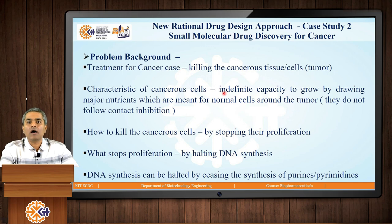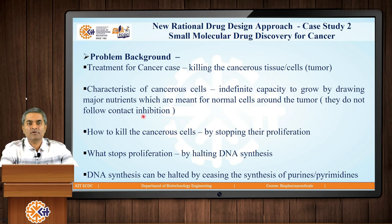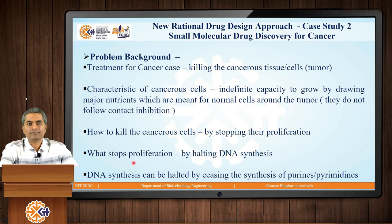Cancerous cells are escaping their normal cell cycle and have an indefinite capacity to grow by drawing major nutrients meant for normal cells around the cancerous tissue. This means they do not follow the contact inhibition property of normal cells. To kill cancerous tissue, we need to stop their proliferation so the tumor will not grow. We can stop proliferation by halting DNA synthesis — because if we do not let the DNA divide, the cells will also not divide as per the cell cycle.